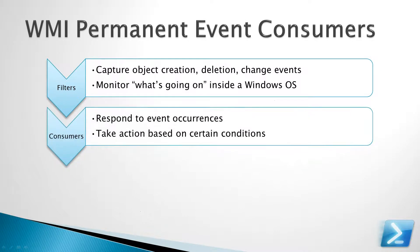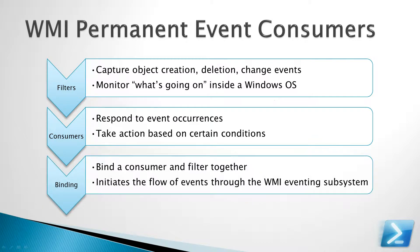Second, we have a consumer, and the consumer is the second major piece of a Permanent Event Consumer. The consumer's purpose is to respond to occurrences of events that are defined by a filter. There are several different consumer classes you can take advantage of to determine how you would like to respond to an event. The third and final part is the binding, which is simply the glue between a consumer and a filter, and it initiates the flow of events through the WMI eventing subsystem.